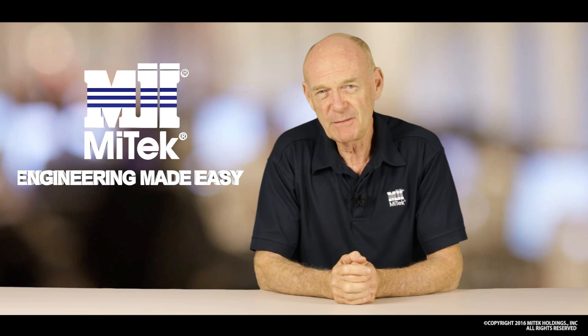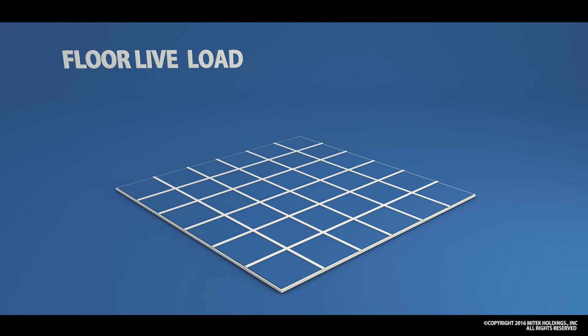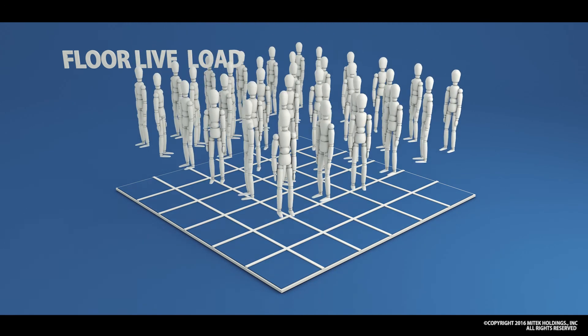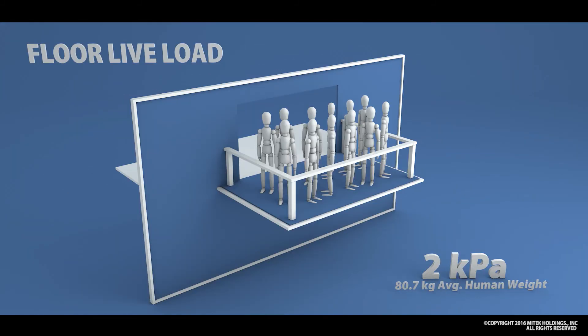I want to concentrate on a live load that is actually related to people. Firstly let's look at what we call a floor live load — it is basically the weight of the number of people that could occupy a building. A residential floor will have a live load of 1.5 kPa, which is 150 kilograms per square meter of floor. You will also see that the balcony load is 2 kPa, which recognises the tendency for more people to gather in a smaller space. Offices and commercial assembly areas have an increase in load as well, reflecting the larger volume of people in the same area.